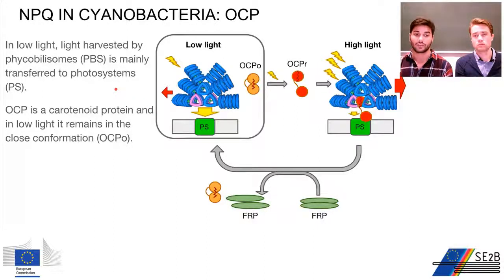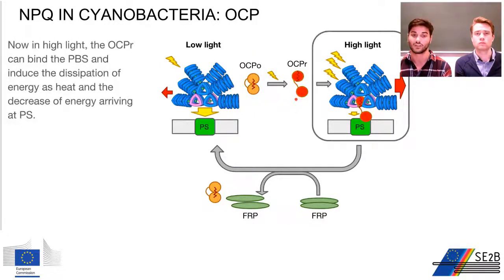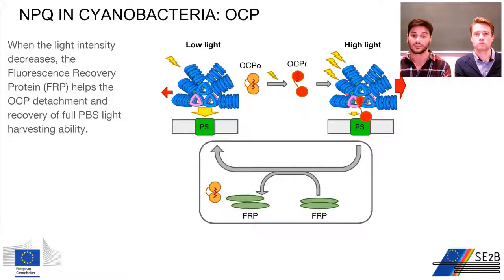In cyanobacteria, under low light conditions the light is harvested by the phycobilisome and mainly transferred to the photosystem for photochemistry. Photoprotective mechanisms take place at the level of the phycobilisome, carried out by the orange carotenoid protein, or OCP. At low light, OCP remains in the inactive orange conformation, but when light intensity increases it can be photoactivated into the red active form. This red active form binds the phycobilisome and induces energy dissipation as heat, reducing the energy arriving at the photosystems. When light intensity decreases, another protein called FRP helps OCP detach from the phycobilisome and restore full light harvesting capacity.